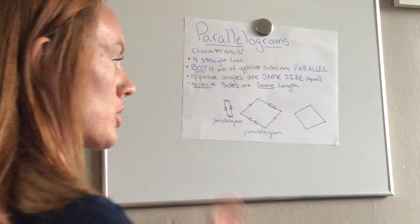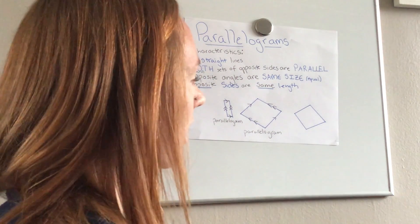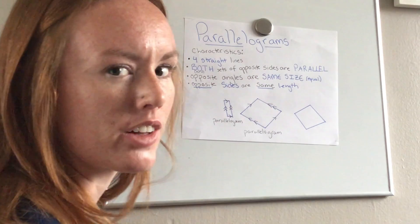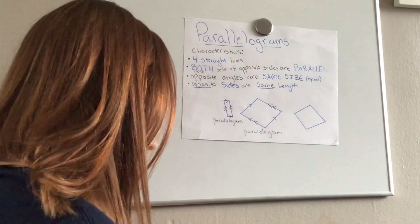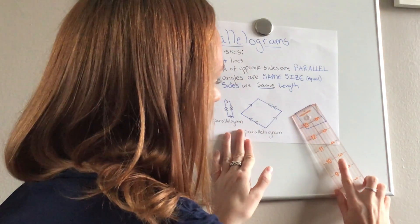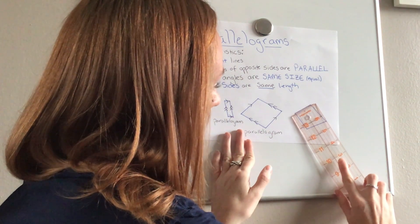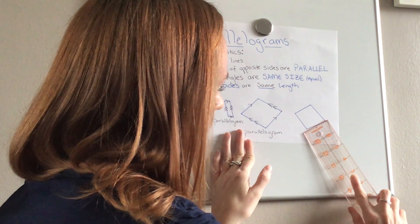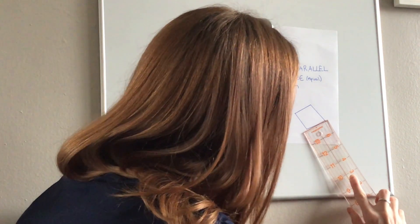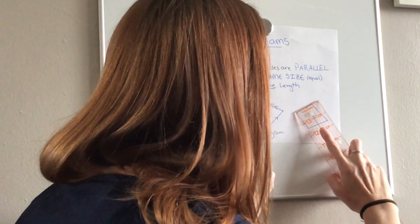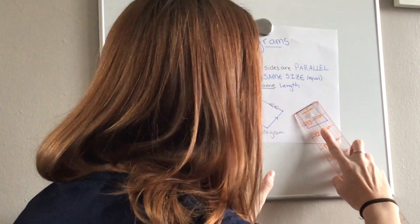And let's check out this one. Already looking at it I can kind of see maybe it's not a parallelogram. So let's try it. Line it up, move it slowly down. They don't seem to line up very well. I'm going to try one more time just to make sure I didn't make a mistake.